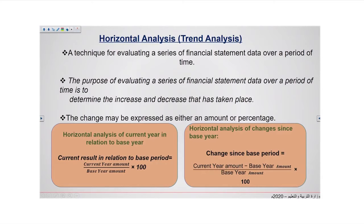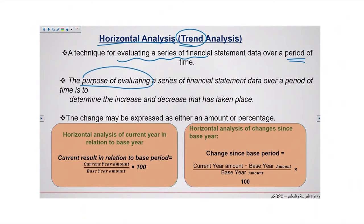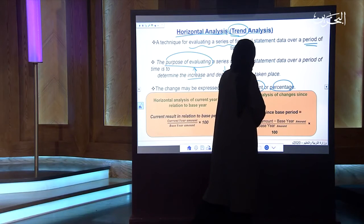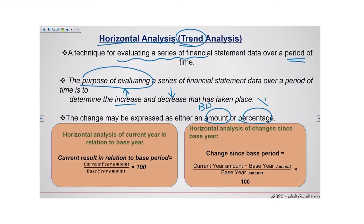In this lesson, we will explain horizontal analysis properly, and for the second lesson, we will explain the vertical analysis. Horizontal analysis — we can also name it trend analysis, both with the same meaning. It is a technique for evaluating a series of financial statement data over a period of time. The purpose of horizontal analysis is to determine the increase or decrease that has taken place. The change may be expressed as either an amount or a percentage.